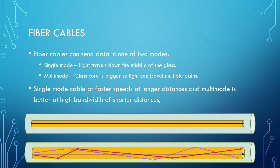Fiber cables can send data in one of two modes: single-mode, where light travels straight down the middle of the glass tube, or multi-mode, where the glass tube is slightly bigger so the light photons being sent can travel in multiple different directions. As a rule of thumb, single-mode can usually run at higher speeds over longer distances than multi-mode, but if you're going for short distance fiber, multi-mode would probably be your choice because it can carry higher bandwidth over shorter distances. In the logical representation, you can see that in single-mode the glass tube is smaller and light travels down the center all the way to the end; with multi-mode the tube is slightly bigger so light has more paths — left, right, middle, etc.